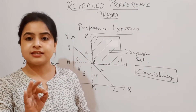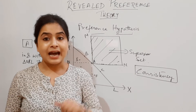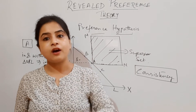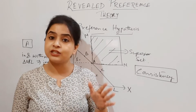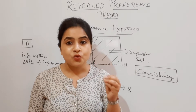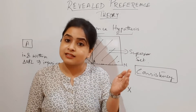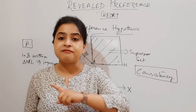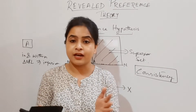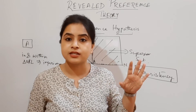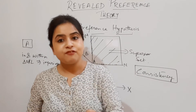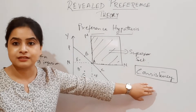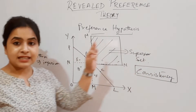What is consistency? Suppose a consumer is choosing consumption bundle A and not choosing consumption bundle B, even though the consumer can also afford B in the initial situation. If the consumer chooses A over B, then in no other situation will the consumer prefer B over A. In short, once a consumer reveals preference for bundle A over B, the consumer can never choose B over A in any further situation. This is the postulate of consistency.